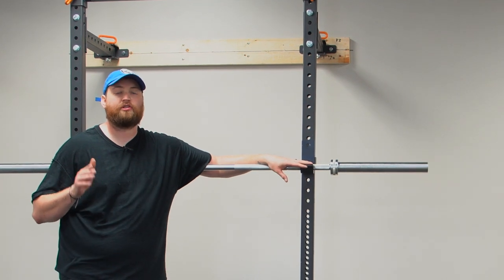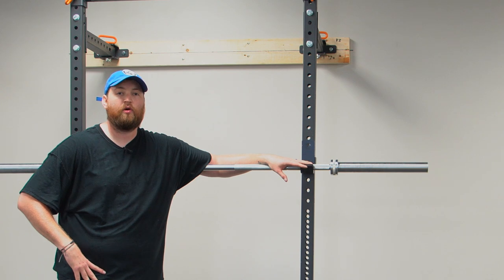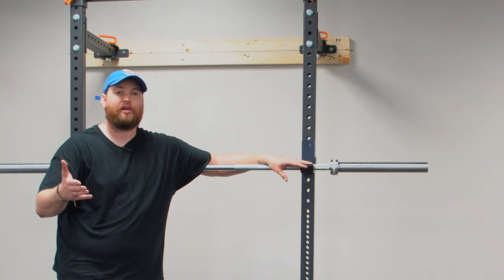This was how to attach your Bells of Steel folding rack to the wall with some wood stringers. We hope this video helps. Thank you so much.